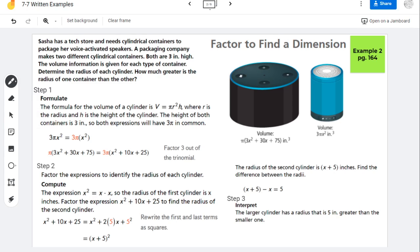In our first step here, what they do is they start with the formula. The volume of a cylinder has this formula: the volume equals pi times the radius squared times the height. Now the height of both containers is three inches, so we went ahead and put a three here. So both of these expressions have three pi in common.